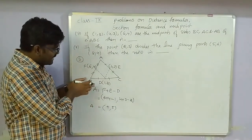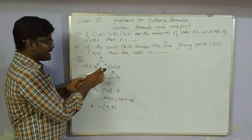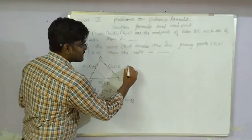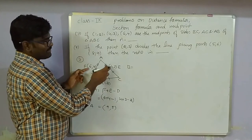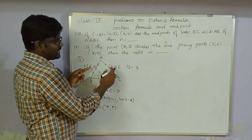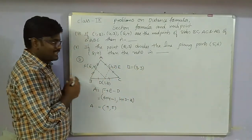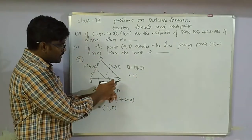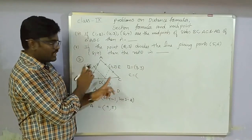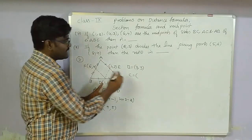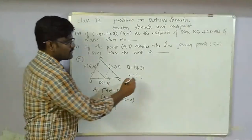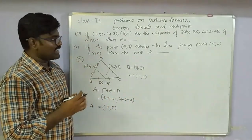For B vertex: B = D + F - E. X: 1+6-4 = 3. Y: 2+4-3 = 3. So B = (3, 3). For C vertex: C = D + E - F. X: 1+4-6 = -1. Y: 2+3-4 = 1. So C = (-1, 1).